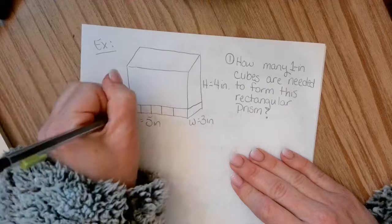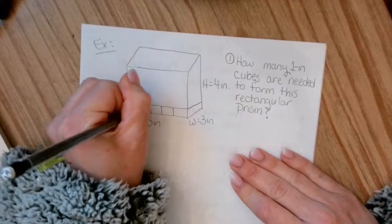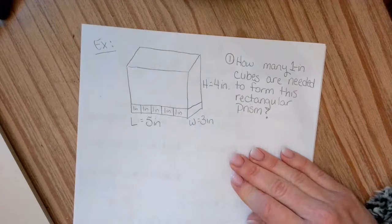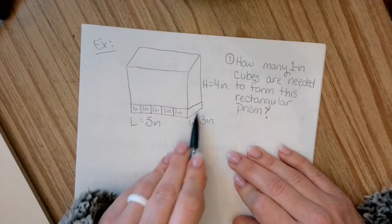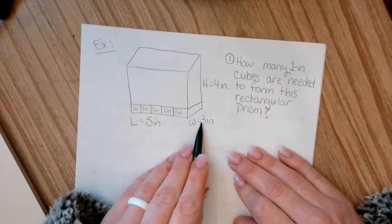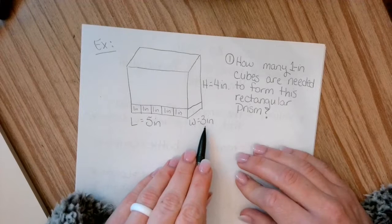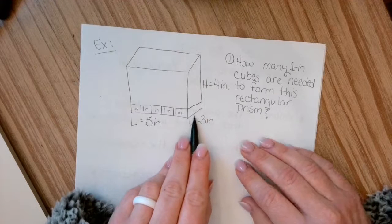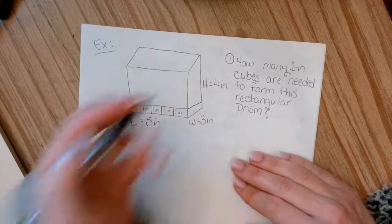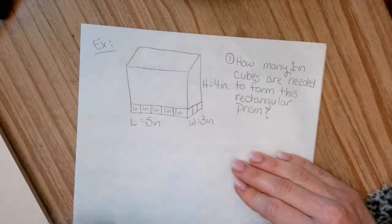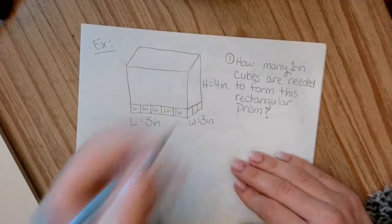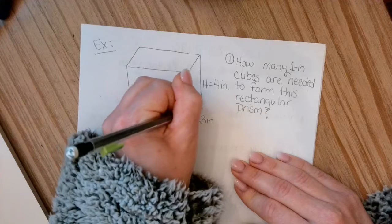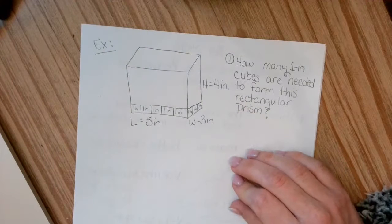So each one of those blocks represents these little one inch cubes. So if you wanted to even write in one inch in each of these, just so you know what those represent. And then the width part right here. So if it's three inches wide, then how many cubes do you think would be on the width part? If you said three, then you are right. So again, each one of those little cubes represents one inch.